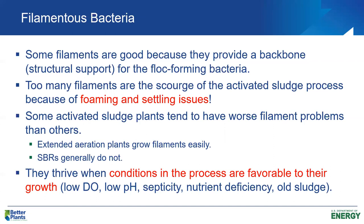Extended aeration activated sludge and sequencing batch reactors generally do not have as big a problem with filamentous organisms. But filamentous bacteria will thrive and become too numerous if conditions are favorable to their growth. Conditions that stimulate filamentous organism growth include low dissolved oxygen, septicity, low pH, old sludge, and nutrient deficiency — things we need to avoid in the activated sludge process.